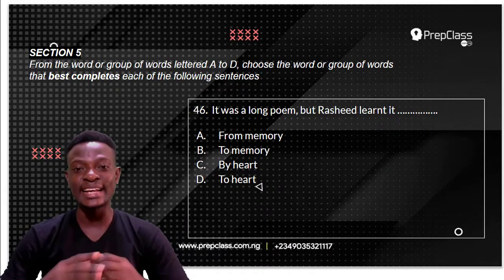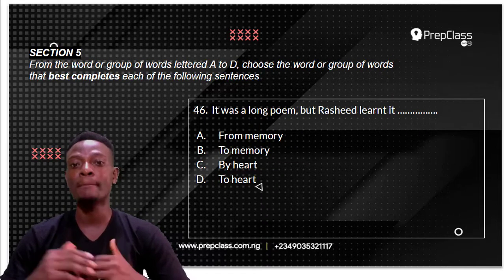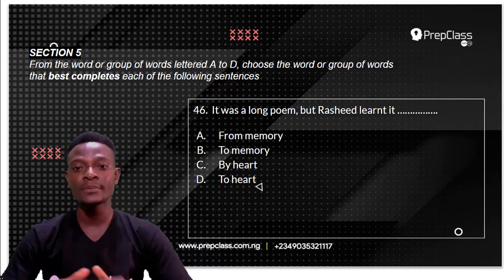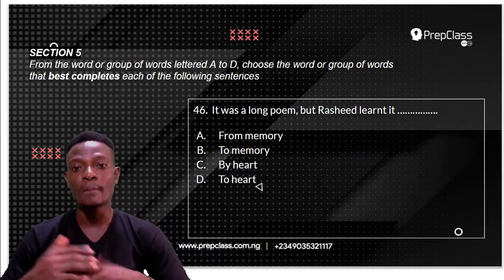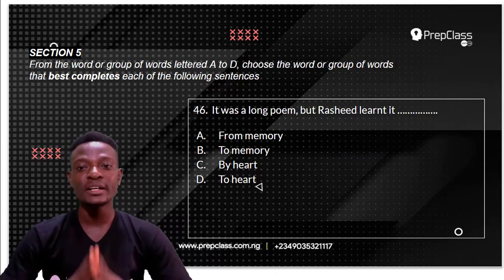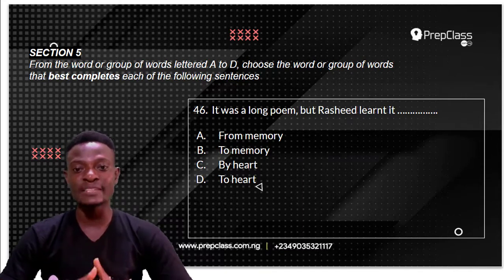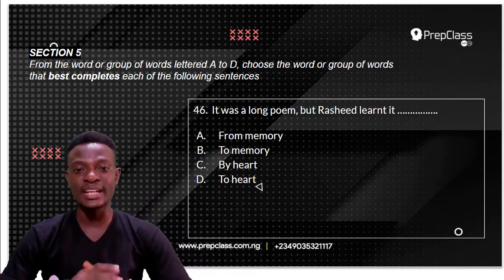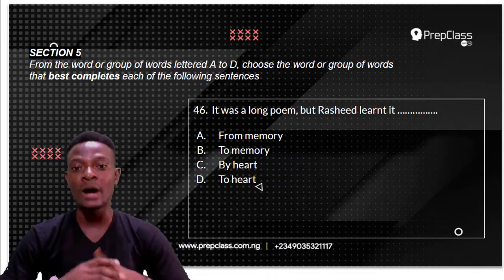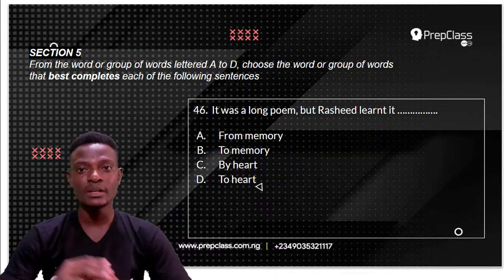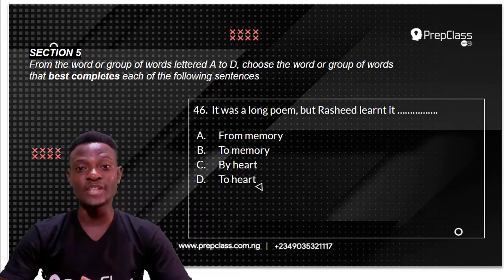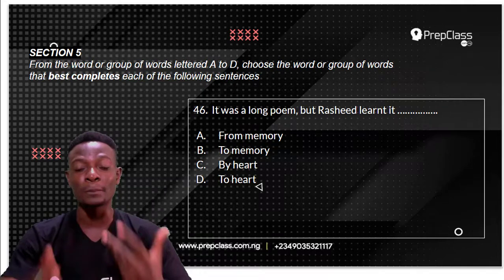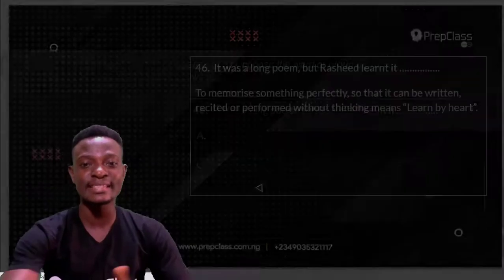The options are: A, Rashid learnt it from memory; B, Rashid learnt it to memory; C, Rashid learnt it by heart; D, Rashid learnt it to heart. Which of these options best completes the sentence?